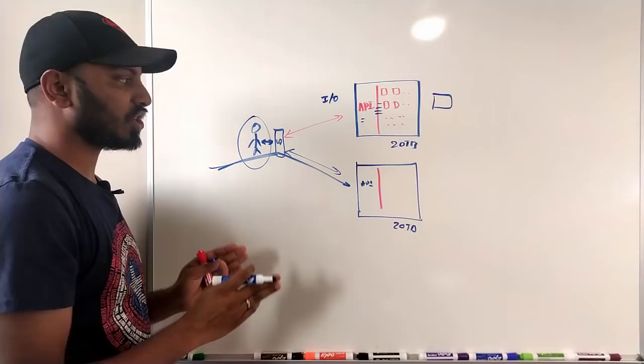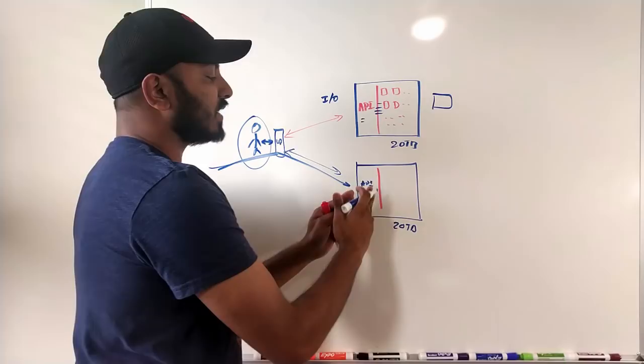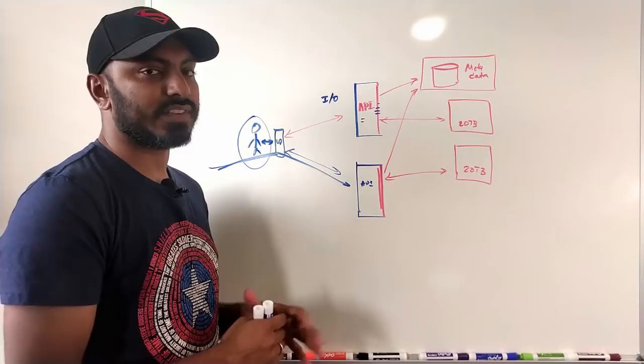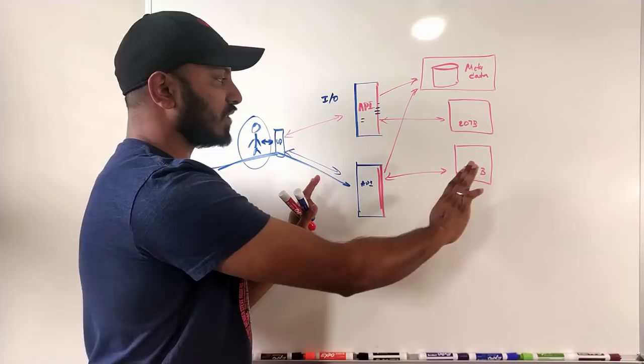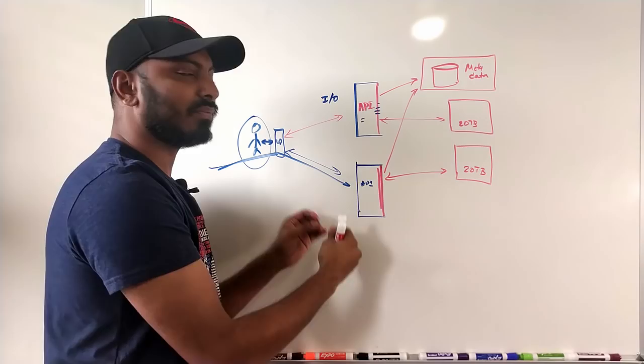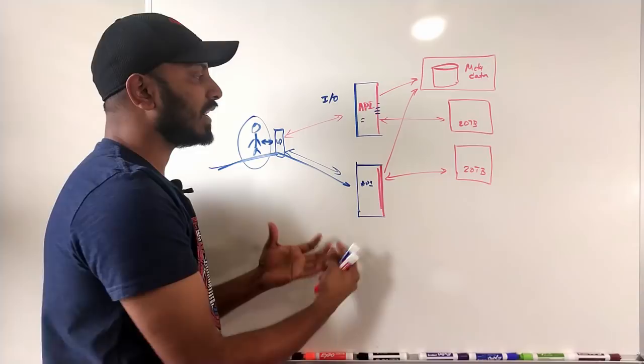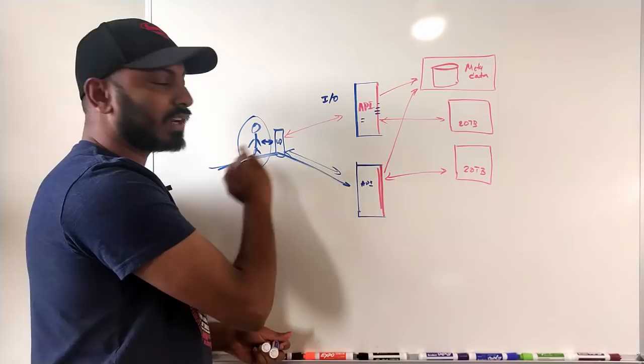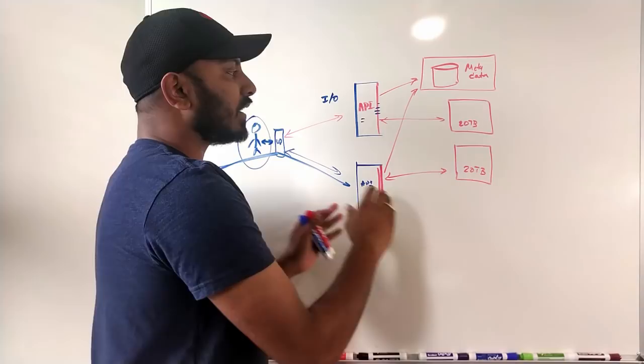To solve this, we separate the API part and the data storage part. The API servers are commodity machines — mostly CPU and RAM intensive, with minimal hard disk. They are dedicated to accepting incoming read, write, and list requests. All write operations are handled by these servers, which are separated out from the actual storage.